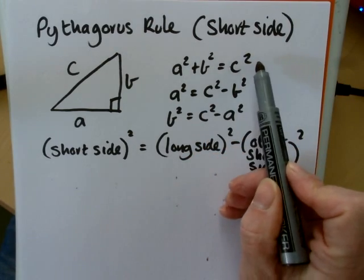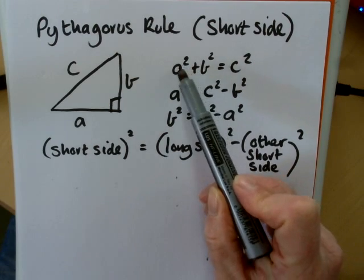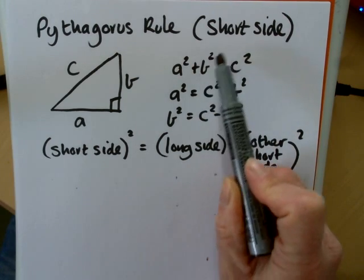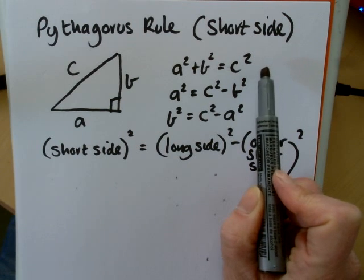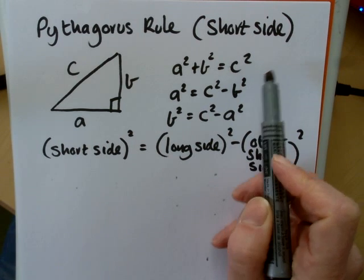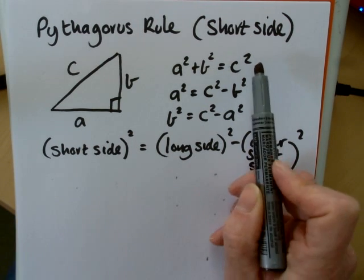So if we rearrange the formula, if we take the a squared over to the other side, sorry, the b squared rather, over to the other side, then it becomes a minus on the other side of the equal side, and you should know that from the equation work.